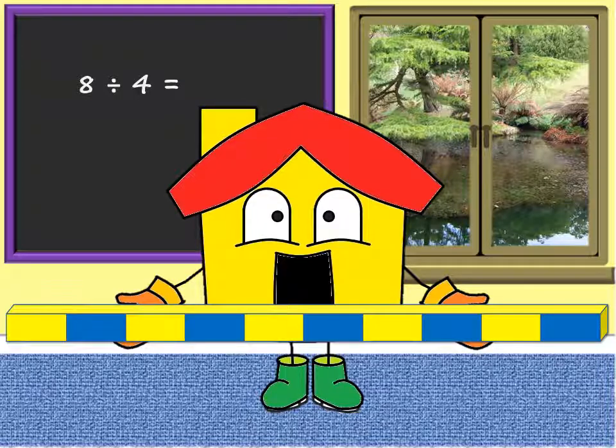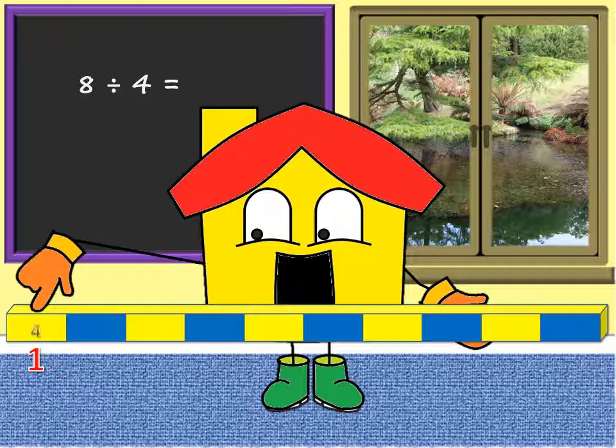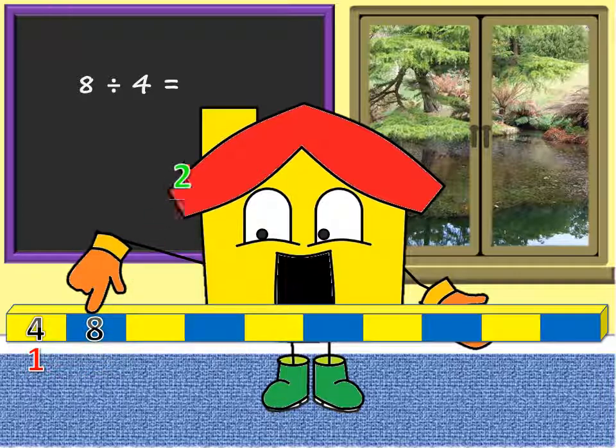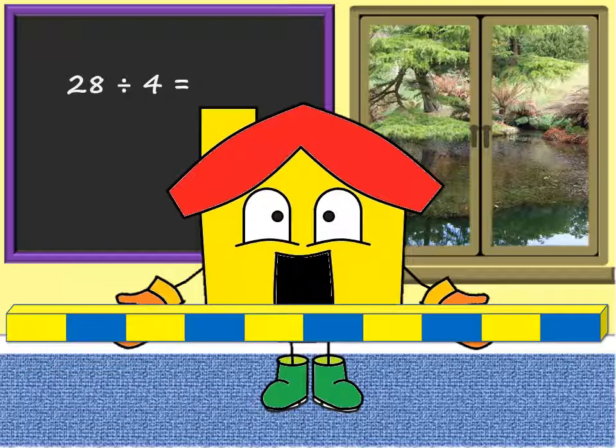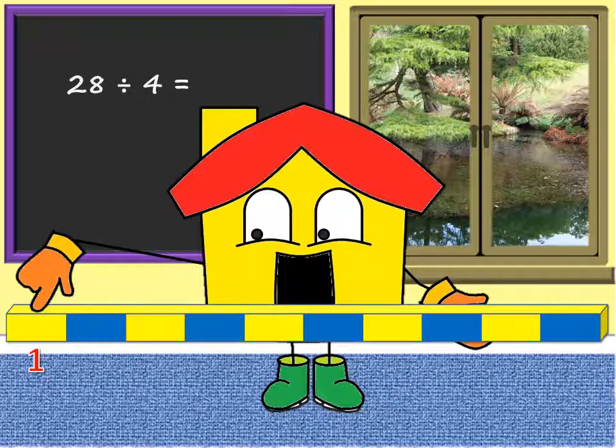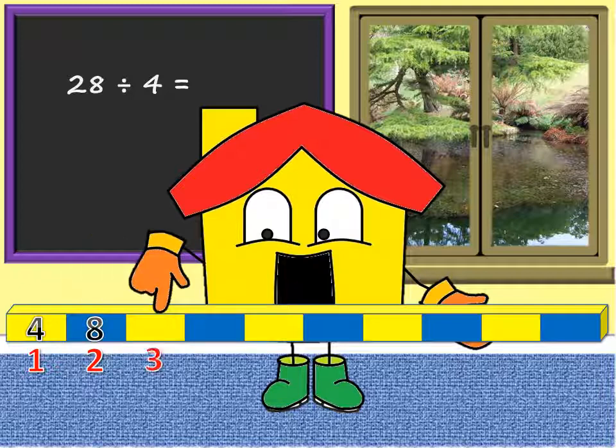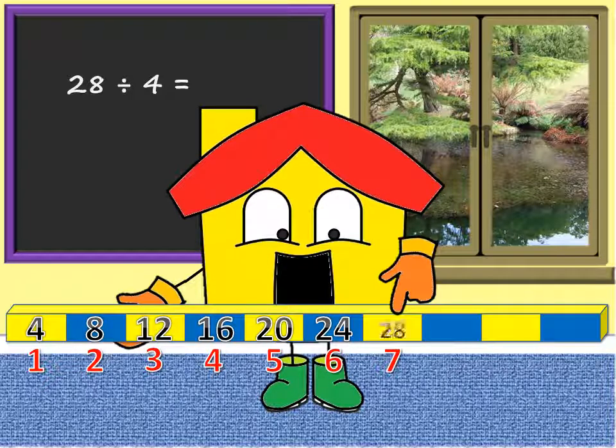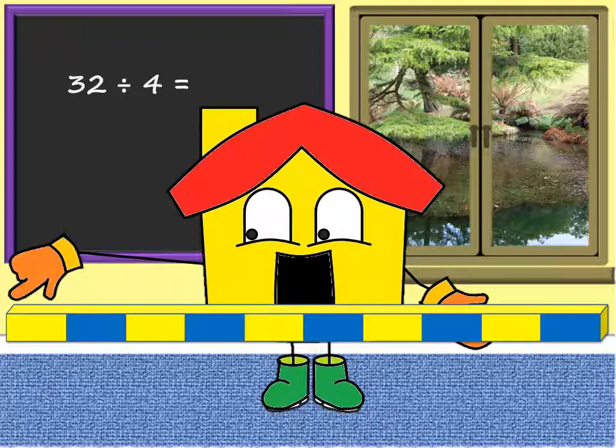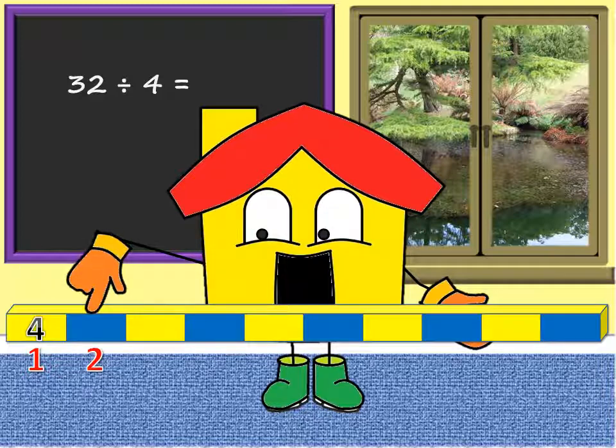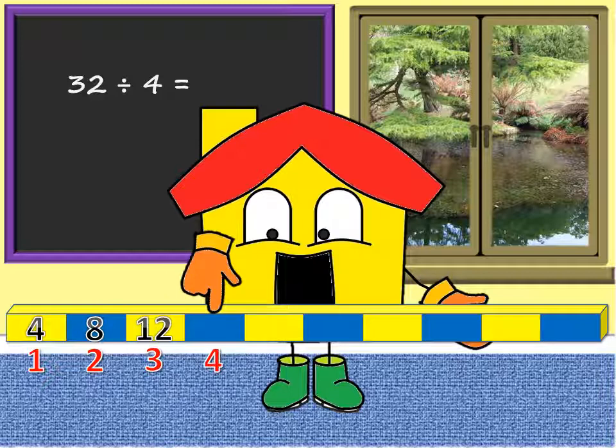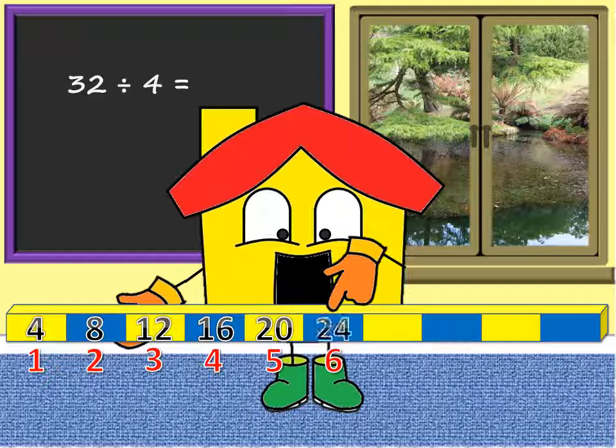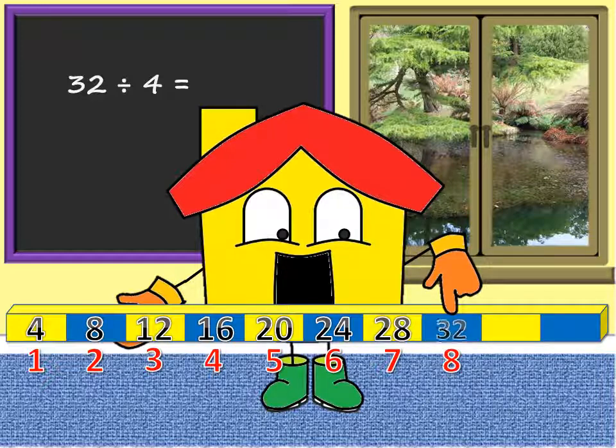Twenty-eight divided by four. Thirty-two divided by four. Twenty-four divided by four.